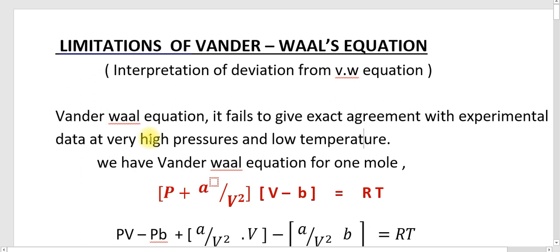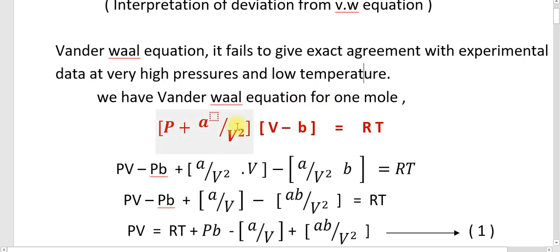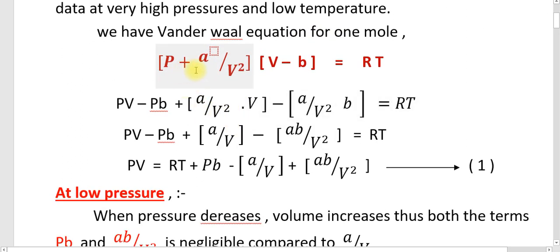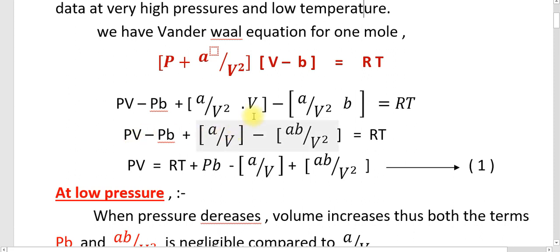We are explaining how it can be explained using the Van der Waals equation. This can otherwise be called the interpretation of deviation from the Van der Waals equation. Consider the Van der Waals equation for one mole: P plus A by V square, into V minus B, equals RT. Cross-multiplying: PV minus PB plus A by V, minus AB by V square, equals RT.